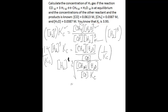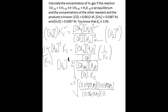Now plug in your values. The concentration of methane is 0.0387 molar, water is the same — 0.0387 molar — divided by carbon monoxide at 0.0613 molar, and your Kc value is 3.93. When you do the math, you'll end up with 0.1839 molar. That is the concentration of hydrogen gas you were asked to solve for.